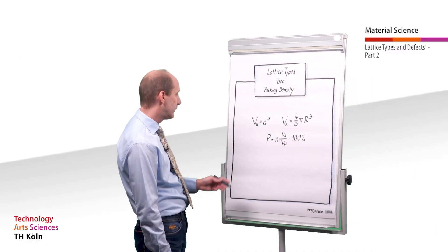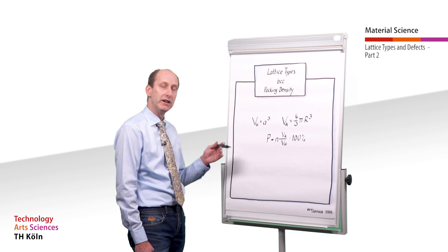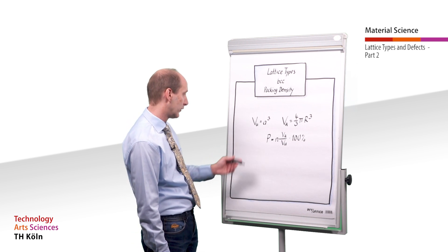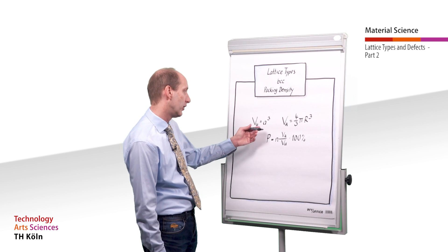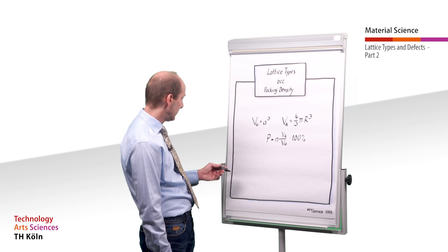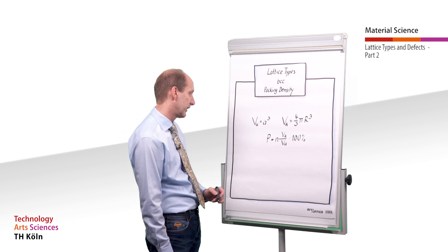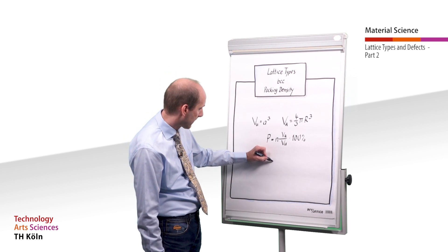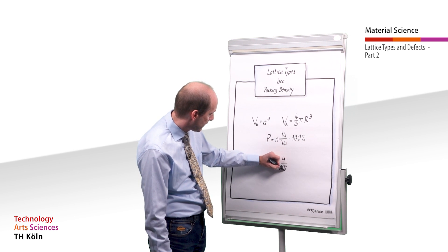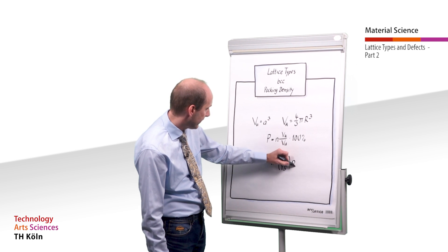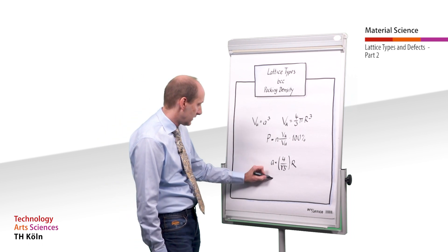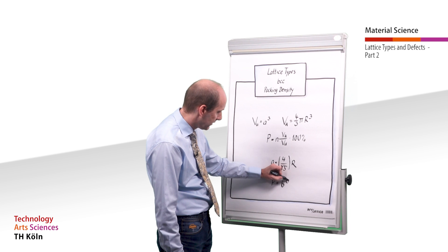Since the body diagonal equals four times the atomic radius, A can be expressed by R. Due to this, we obtain R to the power of 3 in our calculation for both the volume of the atom and the volume of the unit cell. Thus, R to the power of 3 cancels itself in the calculation for the packing density. A equals 4 divided by the square root of 3 times R, which results in a packing density of approximately 68%.